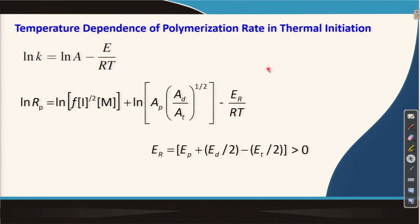I started discussing the temperature dependence on polymerization rate for thermal initiation in the last lecture. This is the Arrhenius equation: A is the pre-exponential factor, E is the activation energy, and K is the rate constant. In Radical Chain Polymerization, we have three rate processes — initiation, propagation, and termination — and the effect of temperature on the overall polymerization rate depends on how temperature affects all three.